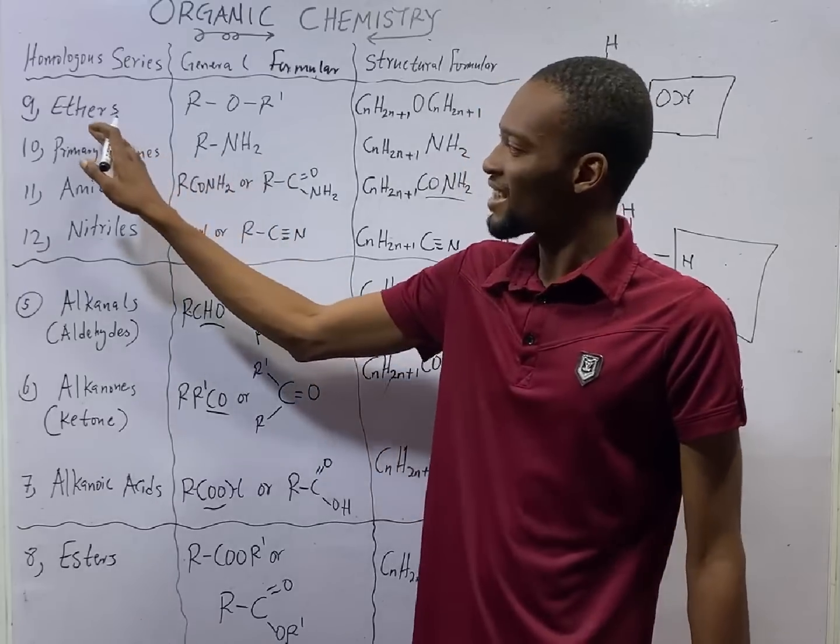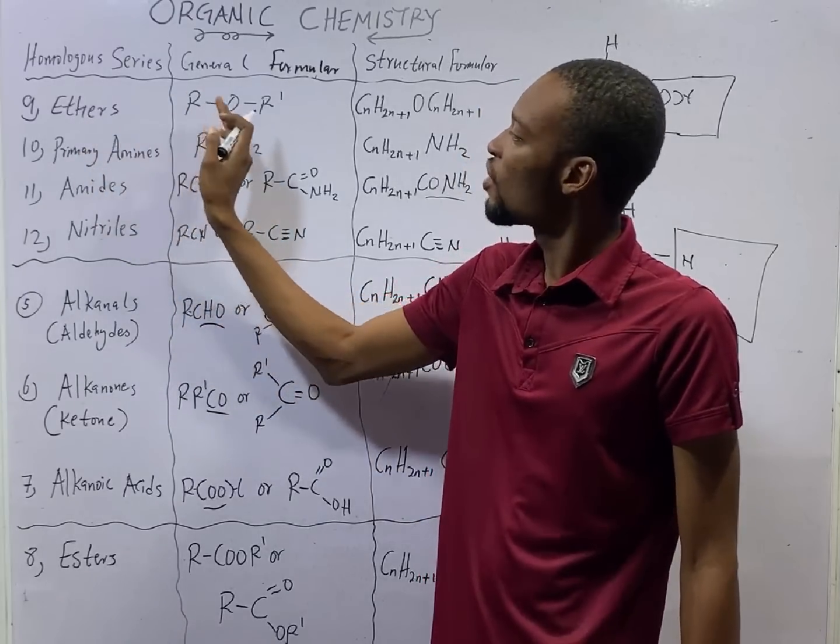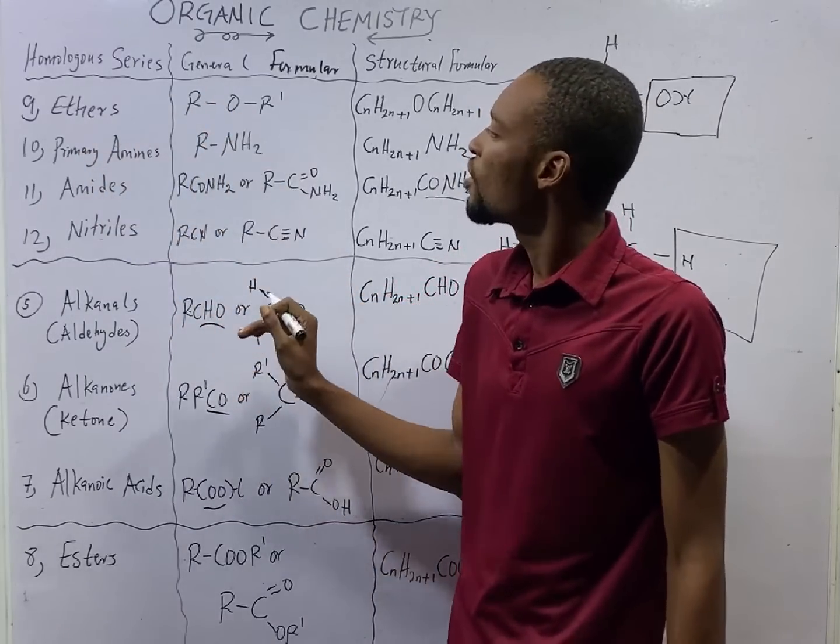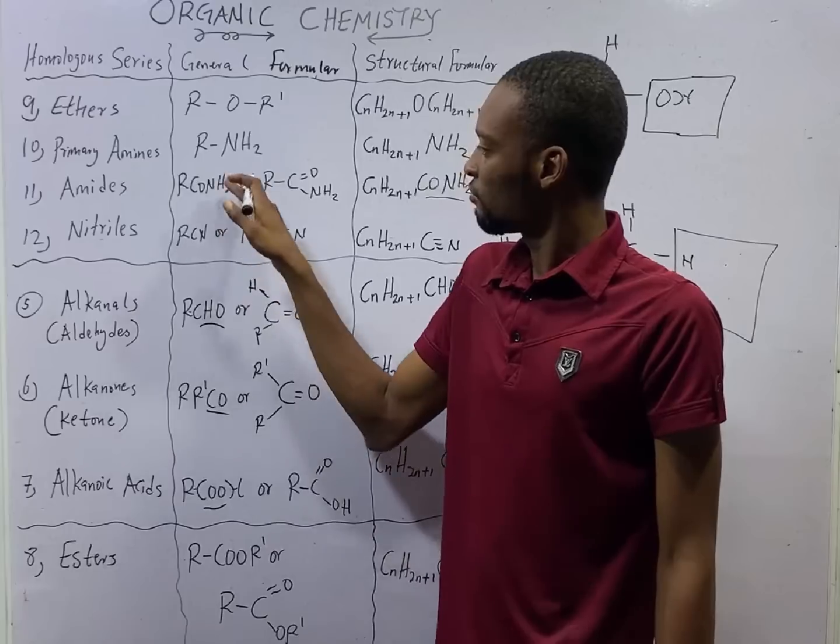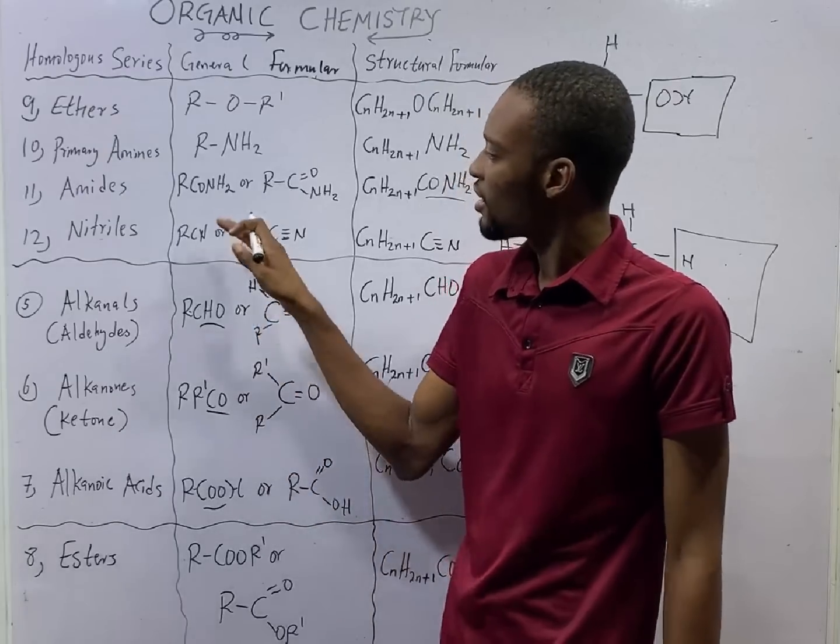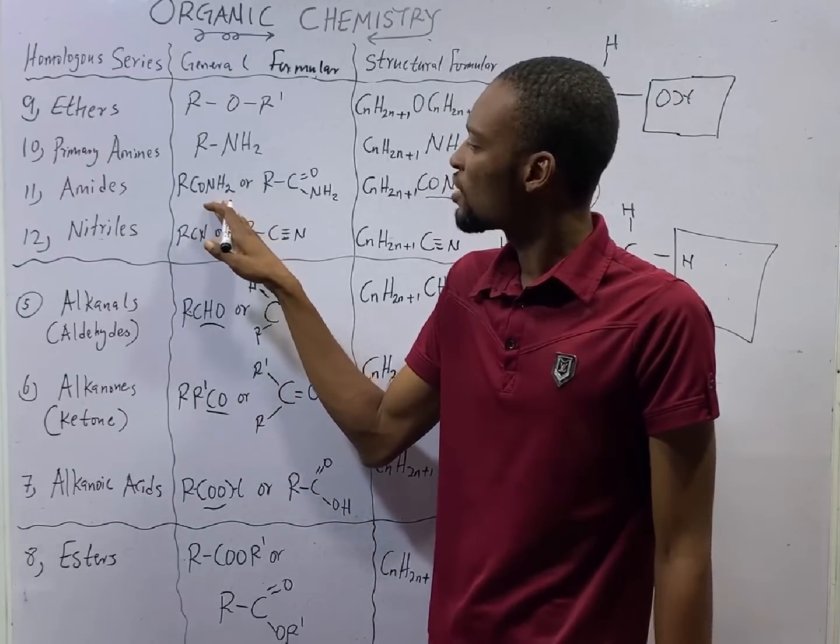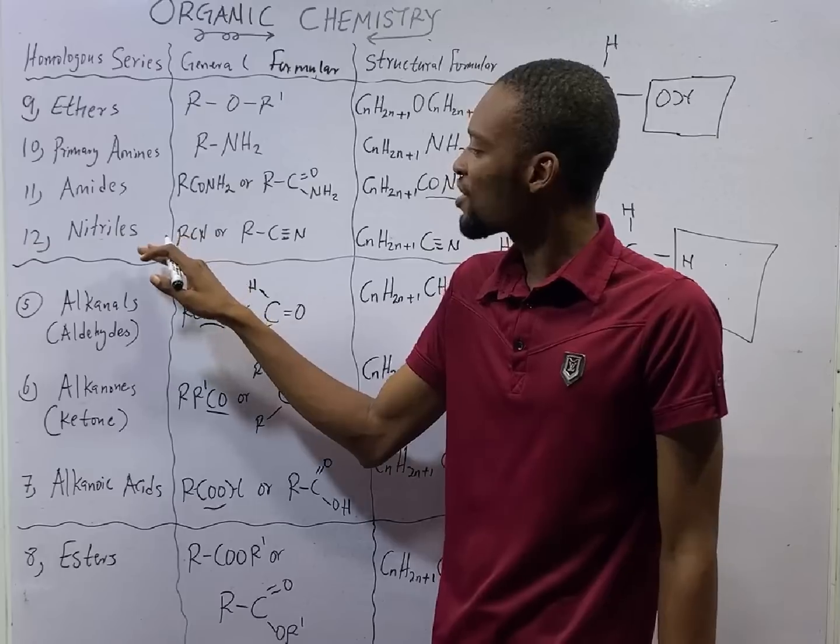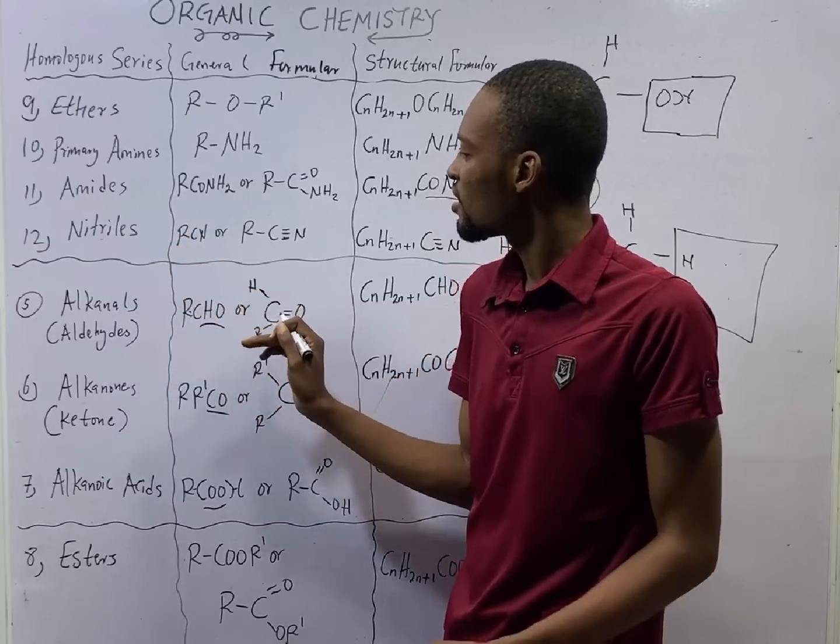For esters, COO is the functional group. For amines, NH2 is the functional group. For amides, CONH2 is the functional group. For nitriles, CN is the functional group, C triple bond to N.